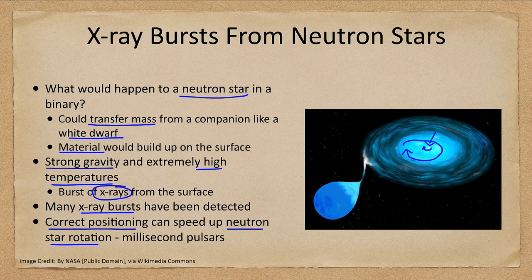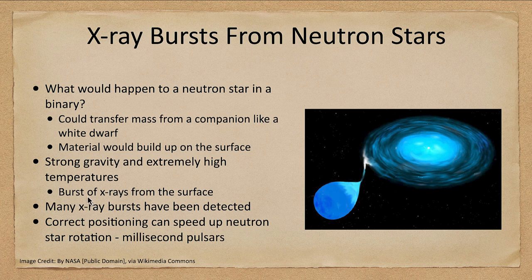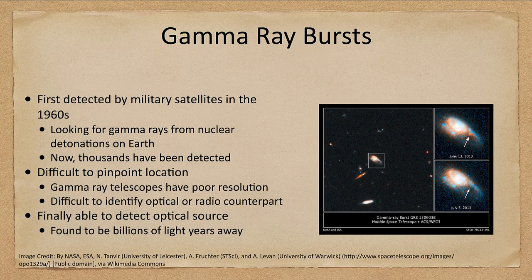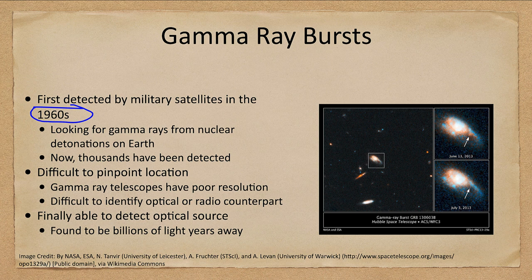The last thing we want to look at here are gamma ray bursts. Gamma rays are the most intense electromagnetic energy, and gamma ray bursts were actually detected by the military in the 1960s. Why would the military detect them? Bursts of gamma rays are associated with nuclear explosions, so tests from nuclear detonations on Earth were being monitored to see who was testing nuclear weapons. And in doing so, they actually found gamma rays coming from the sky, and now we know of thousands of those.